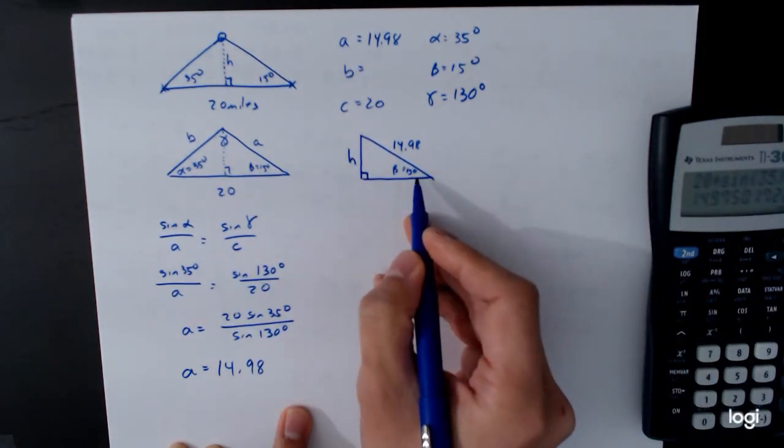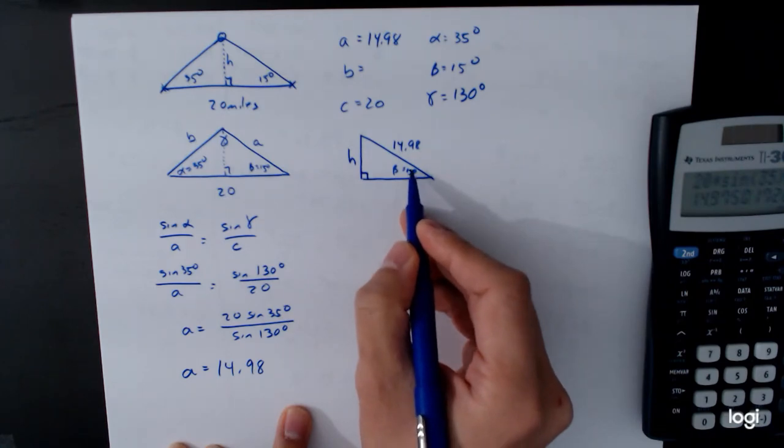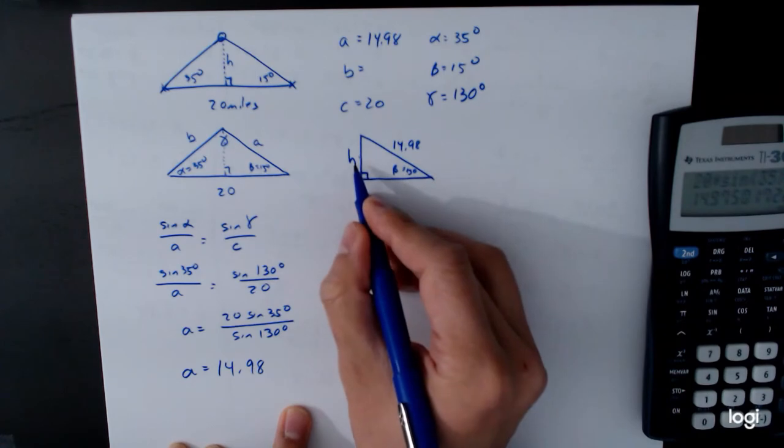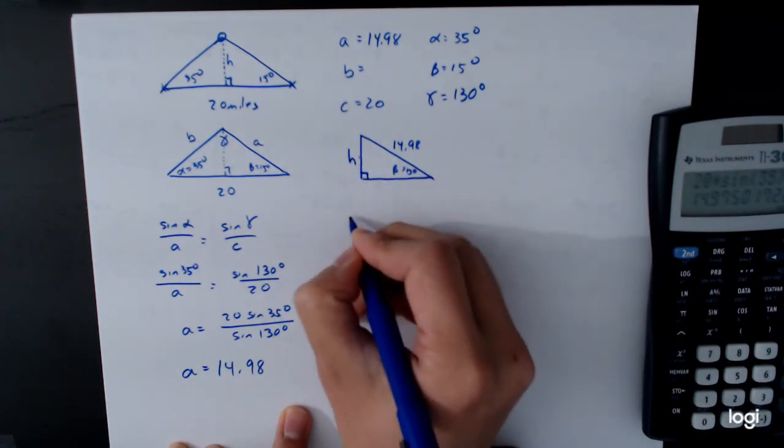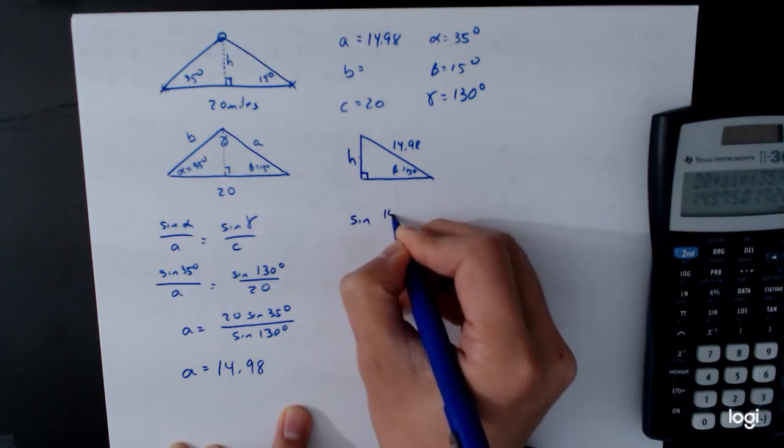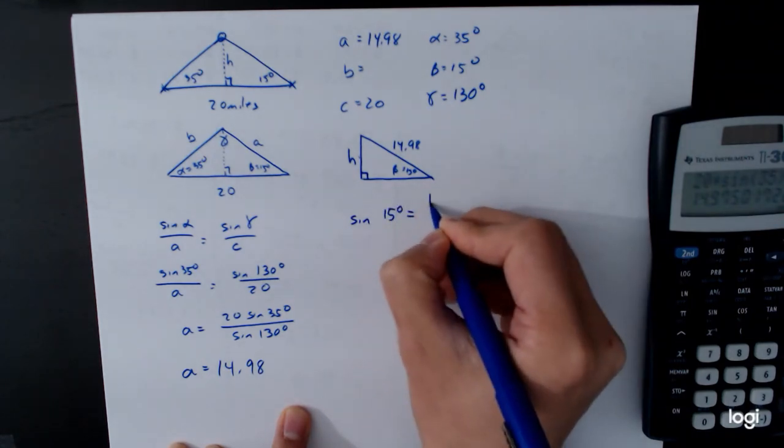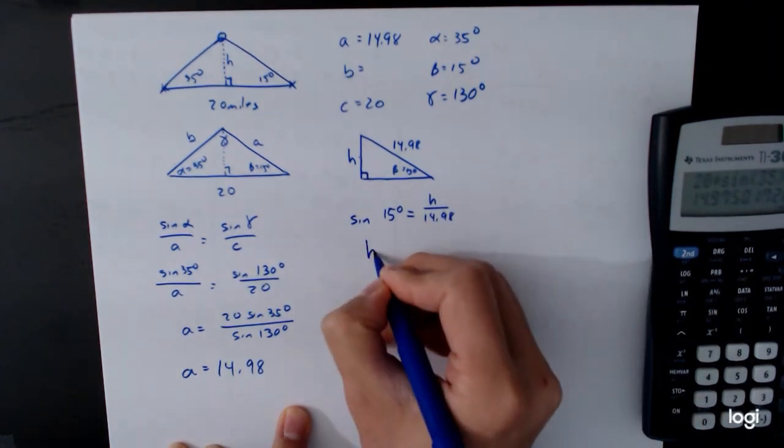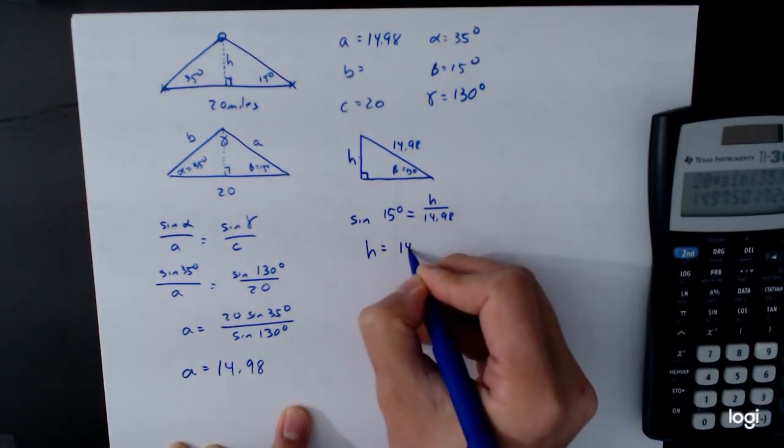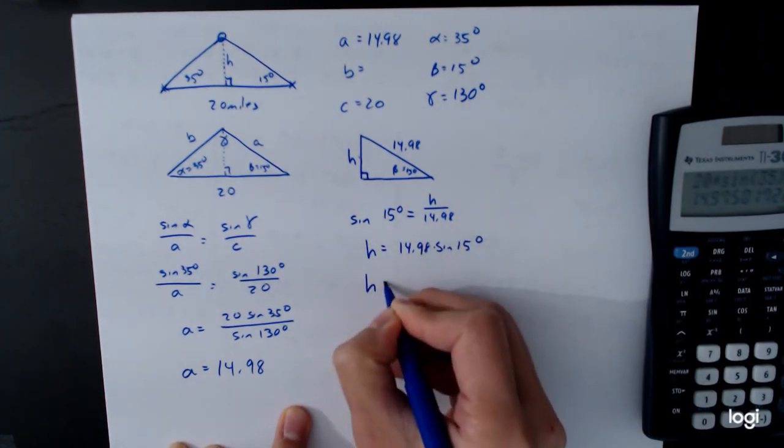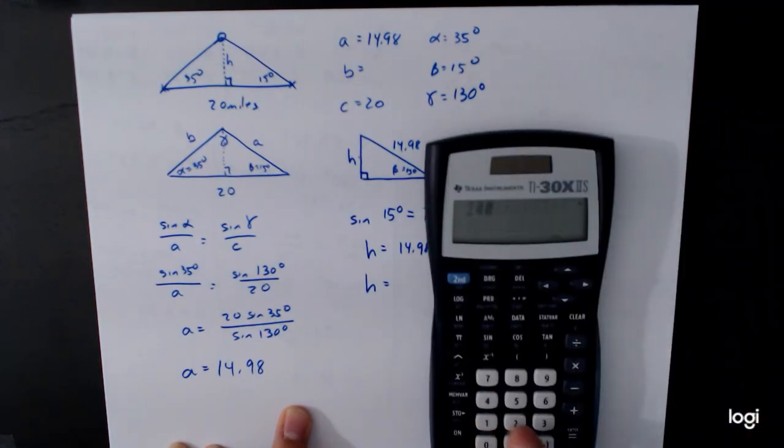And now we have to go back to our previous trigonometry experience. What trig function relates this angle with these two sides? We have the opposite and the hypotenuse. And so that's going to be the sine. Sine of 15 degrees is opposite over hypotenuse. And so we can calculate h. h is 14.98 times sine of 15 degrees. And so h is equal to 14.98 times sine of 15.